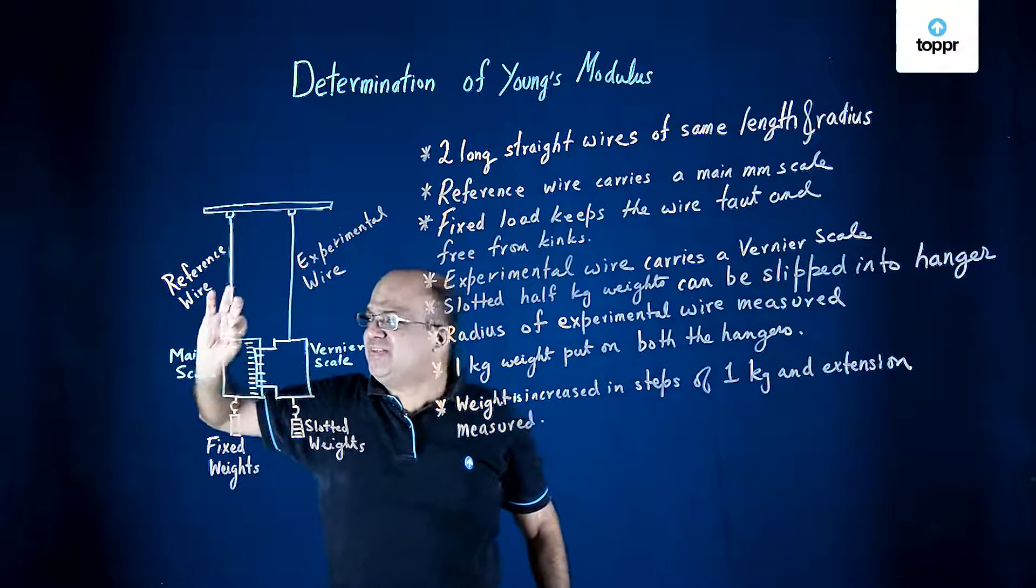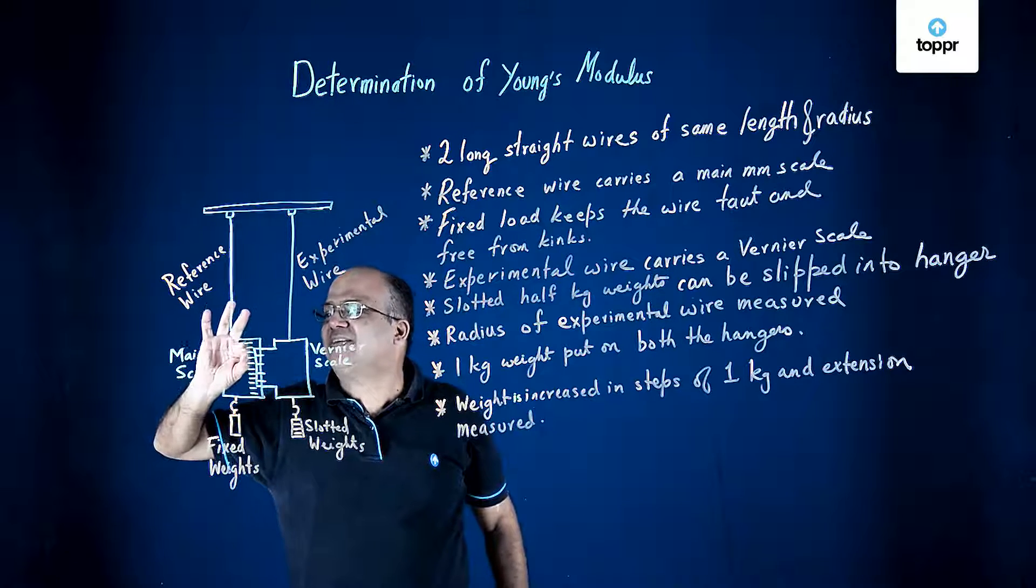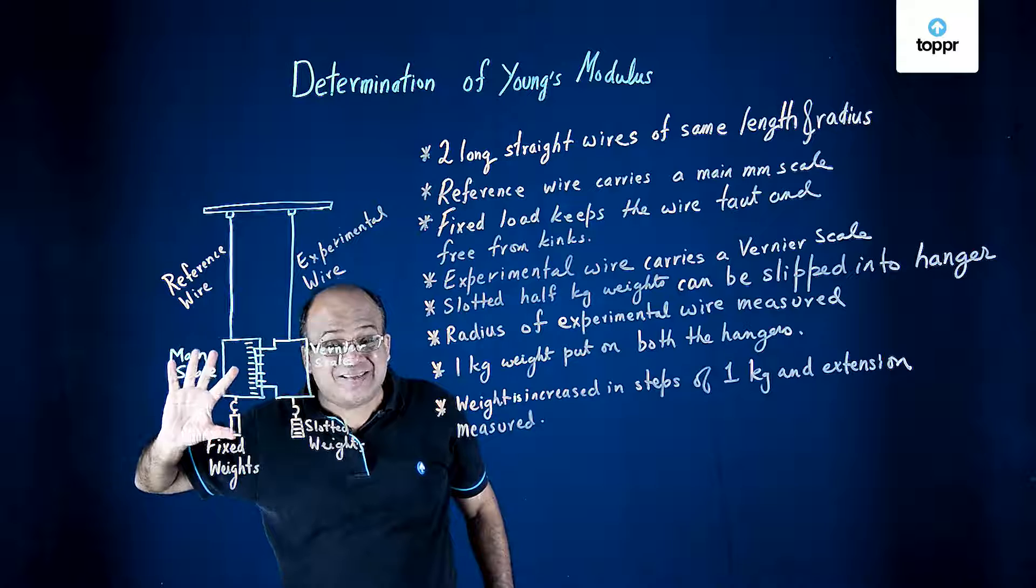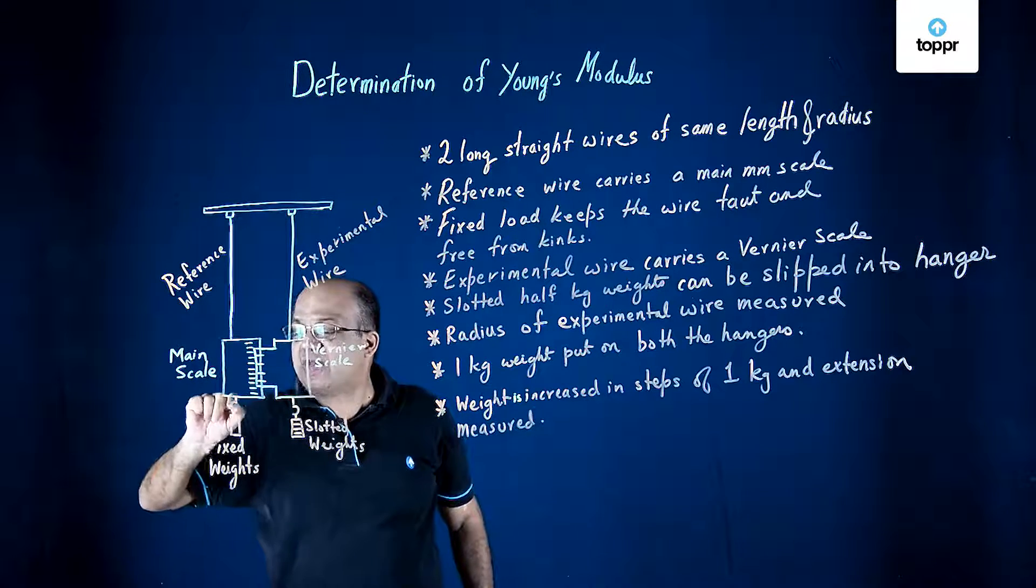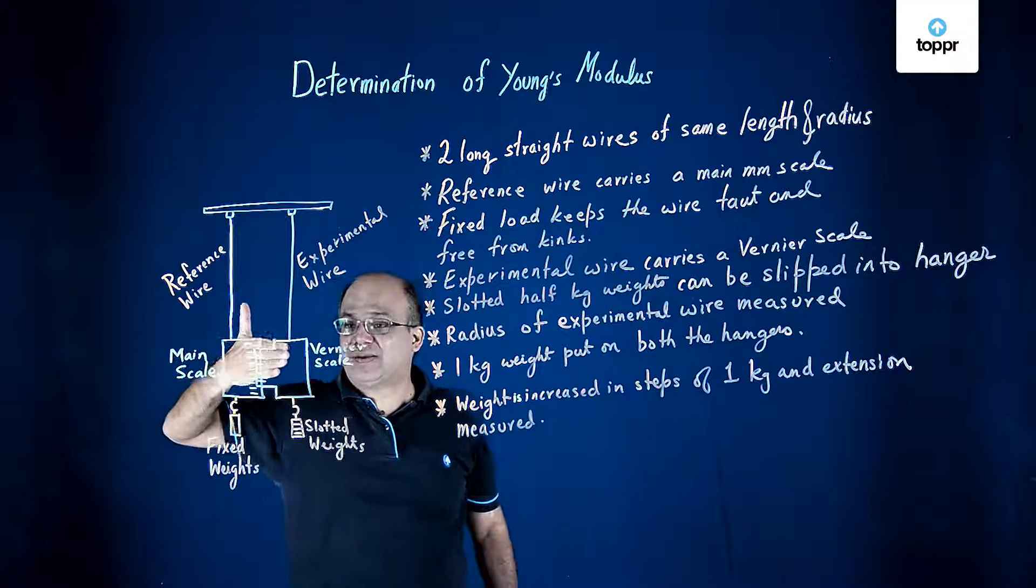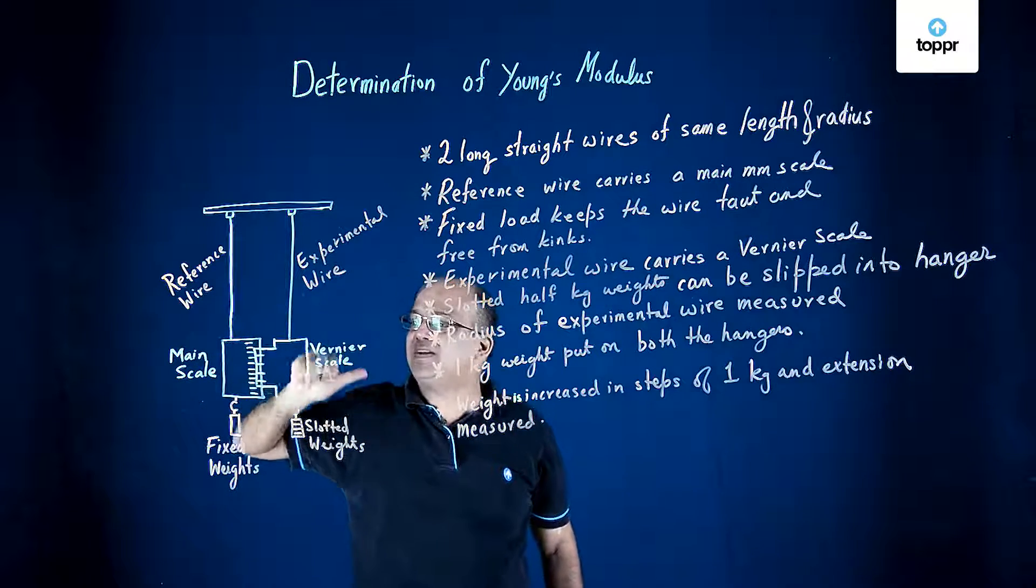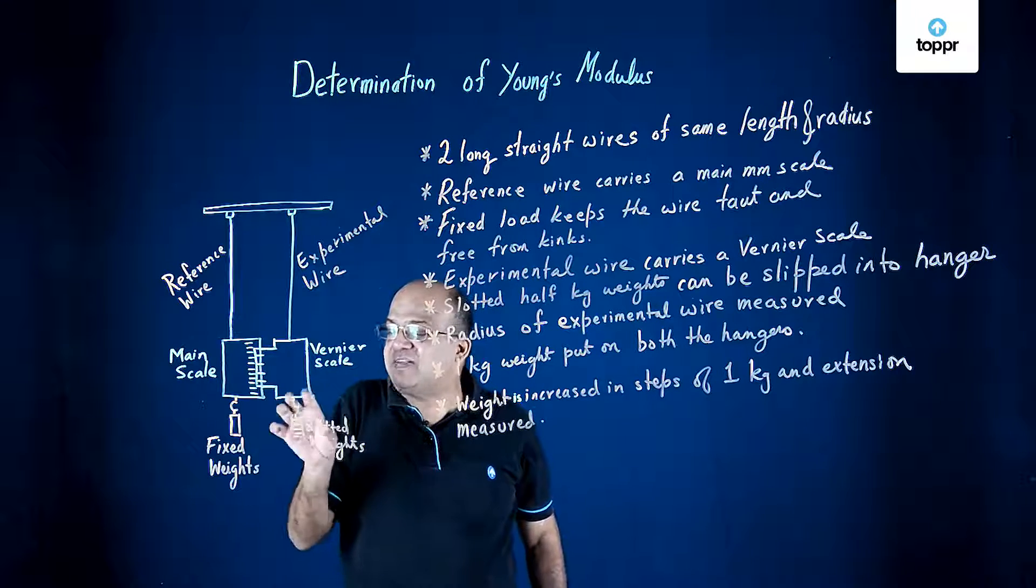Connected to the reference wire is a main scale that has got readings or divisions in millimeters, and here is a hanger where we can hang some weights. This experimental wire is connected to a vernier scale and this also has got a hanger where we can put in some slotted weights.